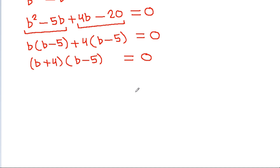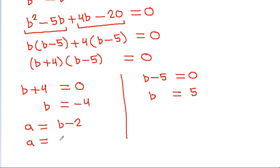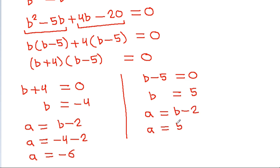So either b plus 4 equals 0, giving b = minus 4, or b minus 5 equals 0, giving b = 5. Since a = b minus 2, when b = minus 4, a = minus 4 minus 2 = minus 6. When b = 5, a = 5 minus 2 = 3.